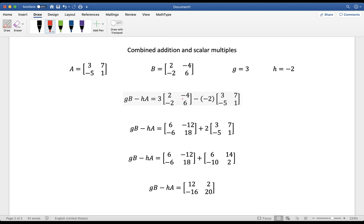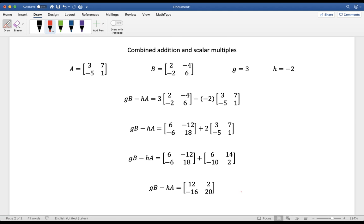So we'll do the multiplication before we do the addition and subtraction. Now that I've done that, now I'm going to add. Six plus six is 12, negative 12 plus 14 is two, negative six plus negative 10 is negative 16, and 18 plus two is 20. And we get our final solution. So if we multiply two two by two matrices by scalars and then add them, we'll get a two by two matrix answer.